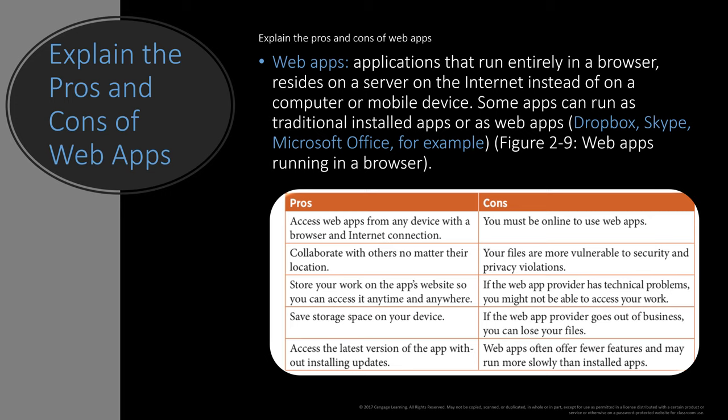Some apps are traditional installed apps where the whole app is installed locally, but web apps need an internet connection to function. Examples include Dropbox, Skype, and Microsoft Office Online or Office 365 — those are web apps. Whereas Microsoft Office downloaded to your computer or tablet is an embedded app installed on your device. A pro of web apps is that you can access them from any device with a browser, so it doesn't matter if you're on Windows, Android, Mac, Unix, or Linux, as long as you have a compatible browser. You can also collaborate with others and store your work in the app's website.